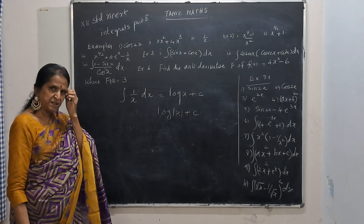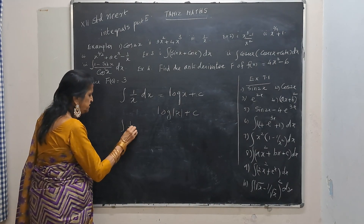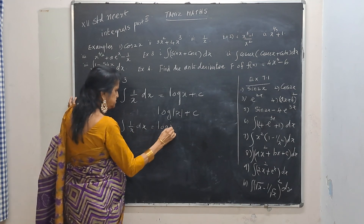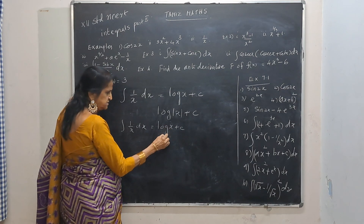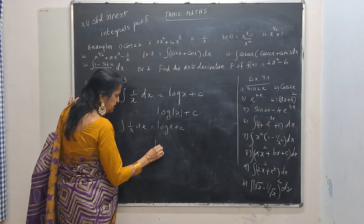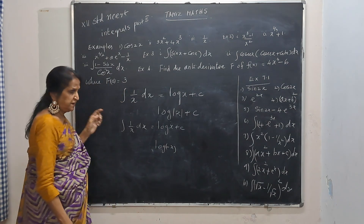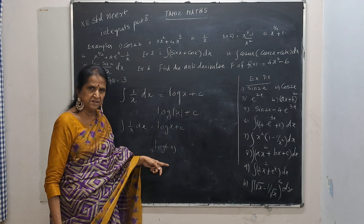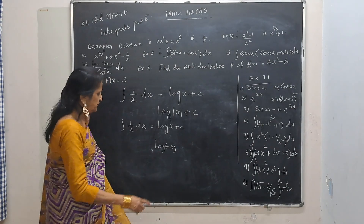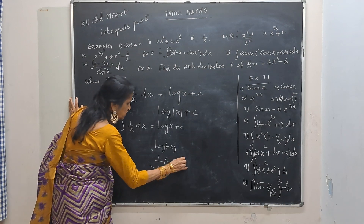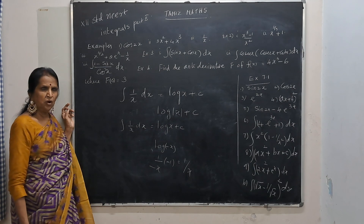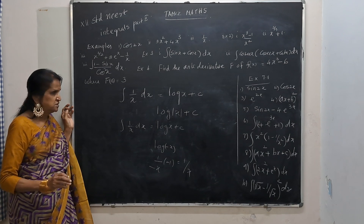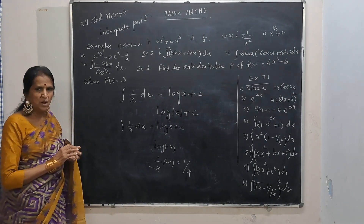To discuss this further: if x is positive, the integral of 1 by x is log x plus c, because the derivative of log x is 1 by x. If it is log of minus x (where x is positive, so minus x is negative), derivative is 1 by minus x into derivative of minus x, which is minus 1. So that minus and minus make plus, giving 1 by x. Combined together, it will be log of mod x. So integral of 1 by x dx is log of mod x plus c.